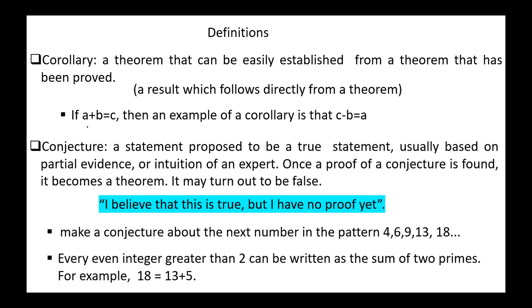For example, if A plus B equals C, then an example of a corollary is that C minus B equals A. Next, conjecture: a statement proposed to be a true statement, usually based on partial evidence or intuition of an expert. Once a proof of a conjecture is found, it becomes a theorem.